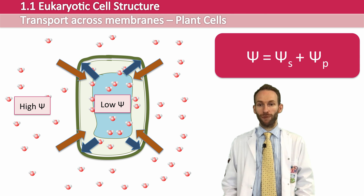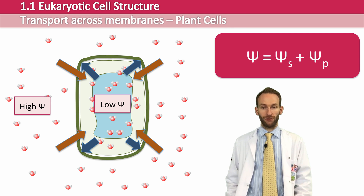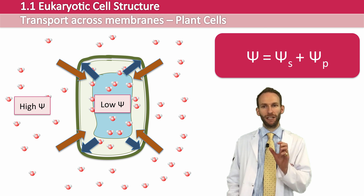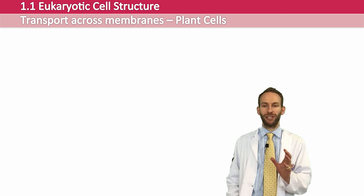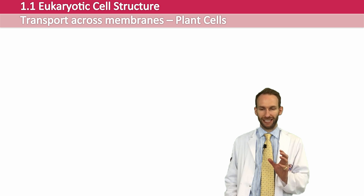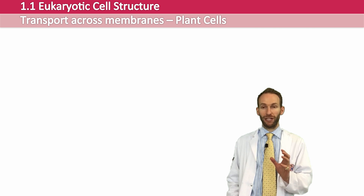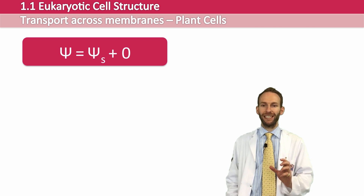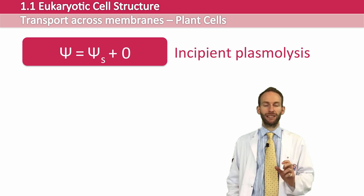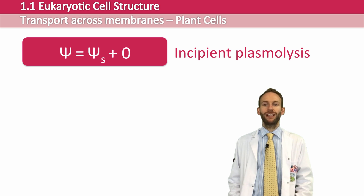When a plant cell is placed in hypertonic solution, it will lose water. The living part of the cell — also known as the protoplast, the cytoplasm and the cell sap — will start to shrink. There will be a very specific point where it is no longer putting any pressure on the cell wall. It hasn't shrunk so much that we can see it as being fully plasmolysed, but it is now no longer putting any pressure on the cell wall — the pressure potential is zero. We call this state incipient plasmolysis. At this point, the water potential is just equal to the solute potential, because the pressure potential is now zero.